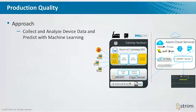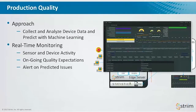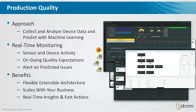Another important use case is production quality — collecting and analyzing device data and predicting with machine learning what the quality of the end result will be based on what you've seen in the past. Instead of a widget making it all the way down a production line only to end up in the reject box, you may spot very early on that if the parameters of the widget are outside a certain range at a given point in the production line, it's going to fail anyway. By incorporating machine learning, sensor data, and edge analytics, you get a better picture of production quality — and that actually ends up with a massive ROI because you're not wasting as much raw material.